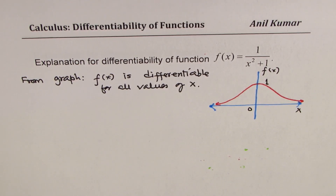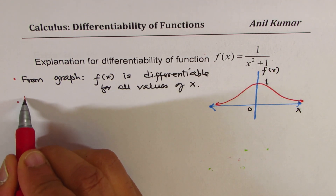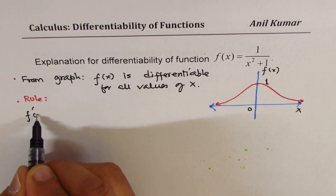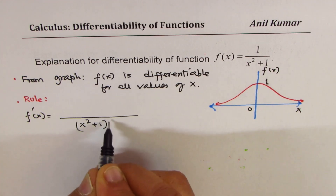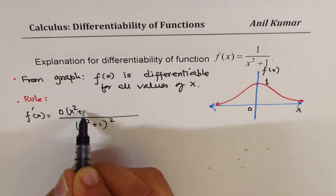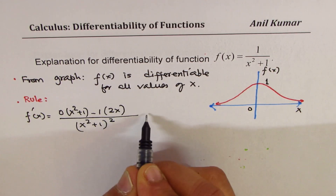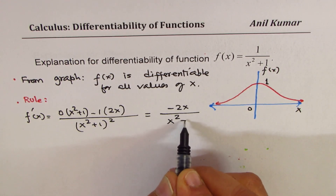Now we have to also show this using derivatives and the rules. We'll use the quotient rule. The derivative of this function is: denominator squared is x squared plus 1 whole square. Derivative of 1 is 0, so 0 times x squared plus 1 minus 1 times derivative of the denominator which is 2x. So we get the derivative as minus 2x over x squared plus 1 whole square.